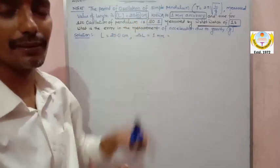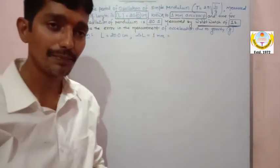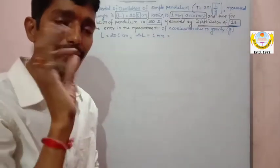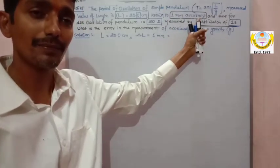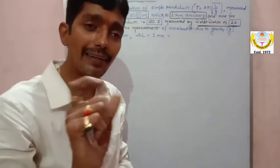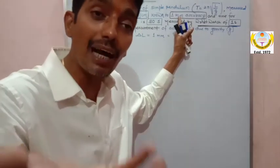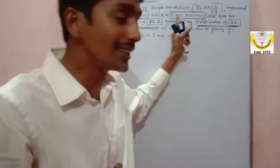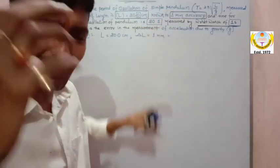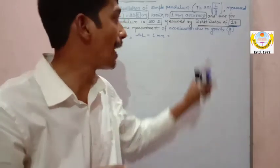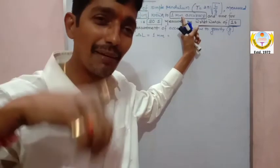Here we are calculating error in a quantity. The formula is already given. The measured value of length is 20 centimeters — that is the true value of length. They said it is known to 1 millimeter accuracy, which means it is known only to a 0.1 centimeter difference. That is the least count error — the length is measured by an instrument with a least count of 1 millimeter.